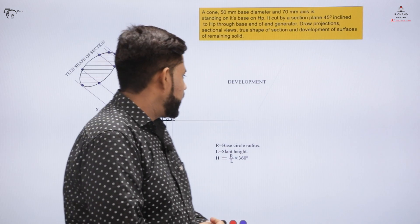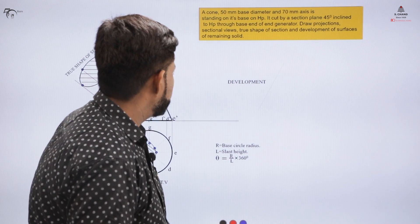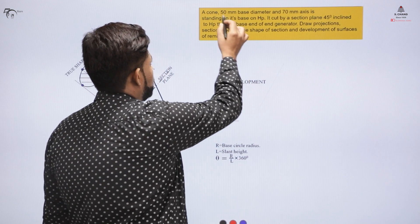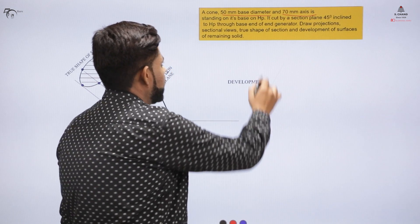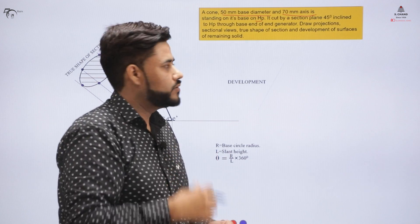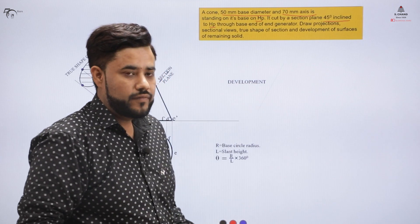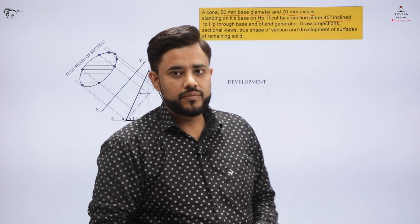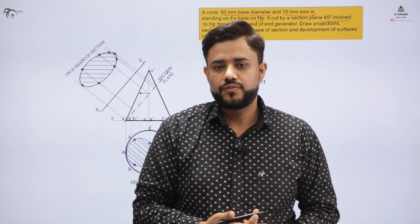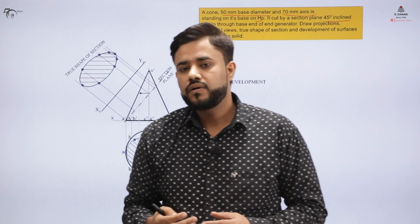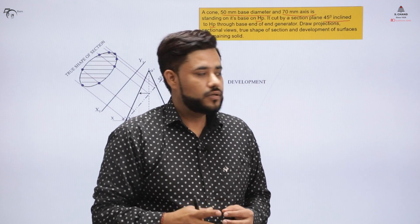The question we were doing in the first part says that you have a cone of base diameter 50 mm and axis 70 mm. It is standing on the horizontal plane, and it is being cut by a section 45 degrees inclined to the horizontal plane. Our aim in this part is to find out the development of surfaces for the truncated cone.